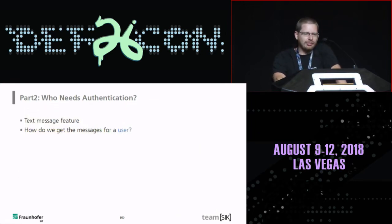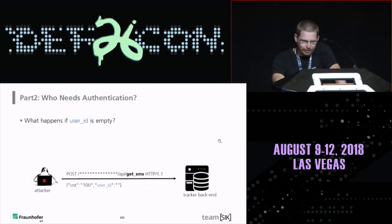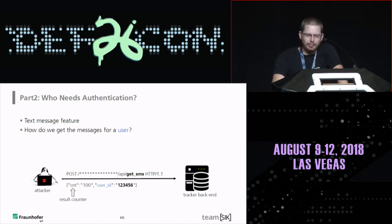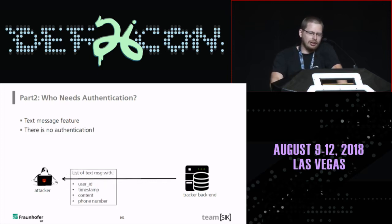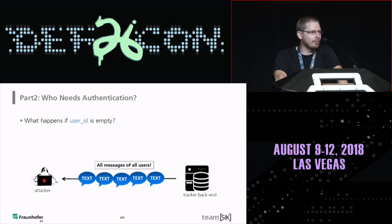Apps also have the possibility to send or track text messages. Looking at the traffic, to get a message you make a simple POST request to an API: you specify how many SMS you want and the user ID. You get back timestamps, phone numbers, and message content. Now, what happens if you leave the user ID empty? You get all stored text messages from the server.